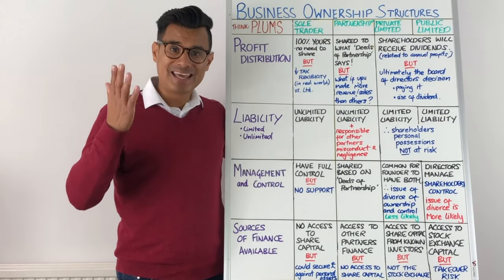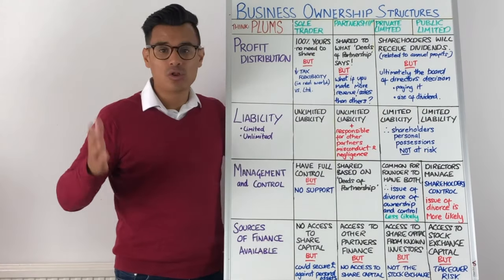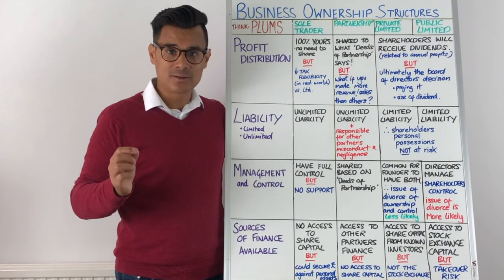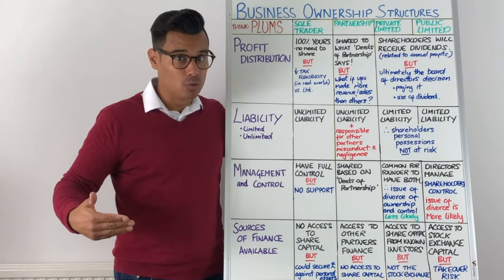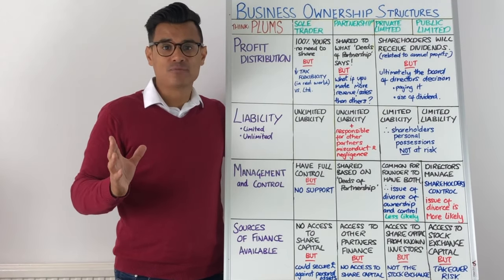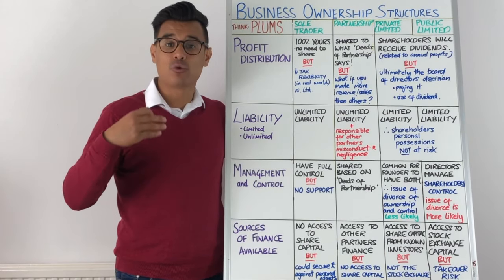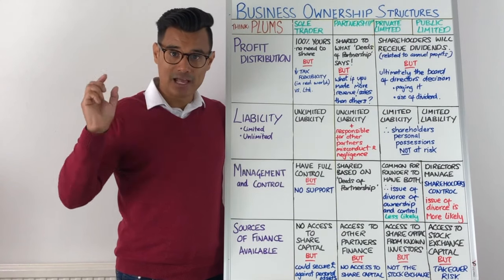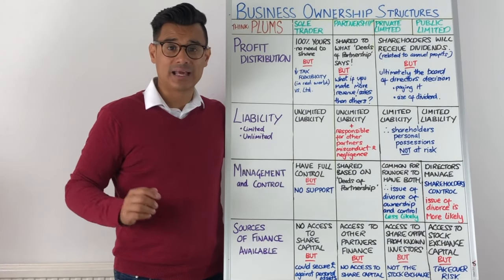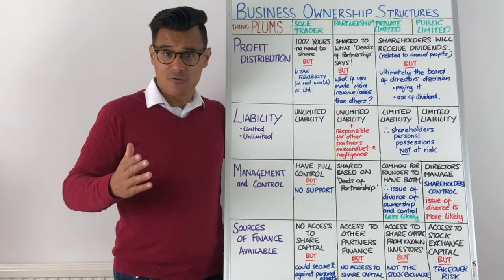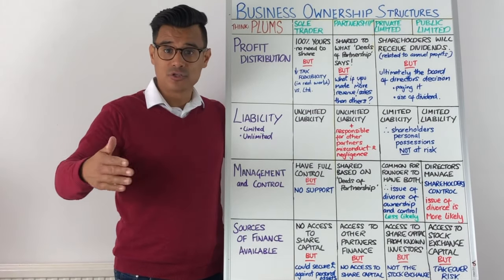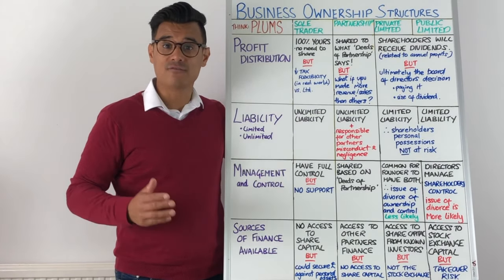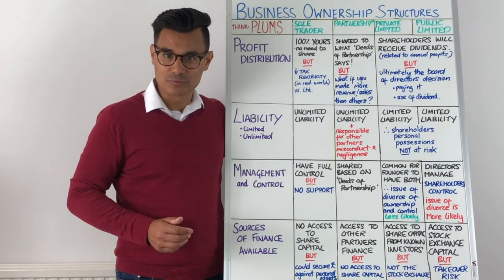Profit Distribution in the case of a sole trader — well the profits are 100% yours. But the reality is in the real world that if you're a sole trader you've got less tax flexibility versus if you are an entrepreneur that, instead of setting up as a sole trader, set up as a private limited company. Because in that case you could pay yourself a salary up to the personal tax allowance and thereafter pay yourself in dividends, and therefore be more creative and flexible with tax.